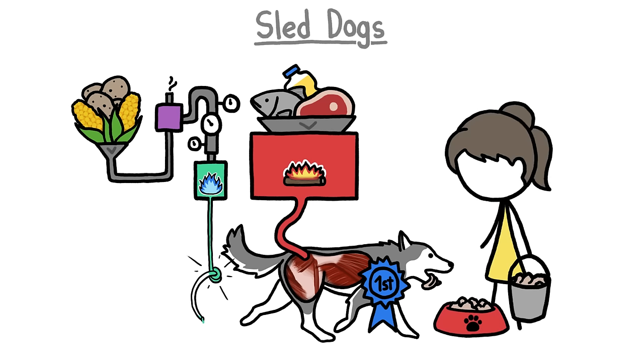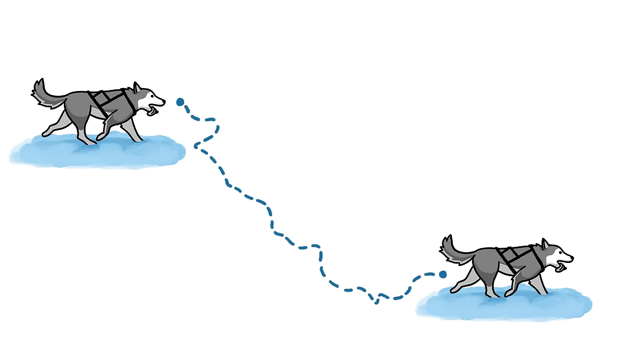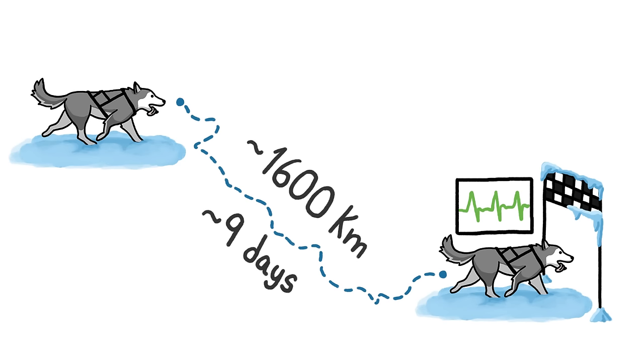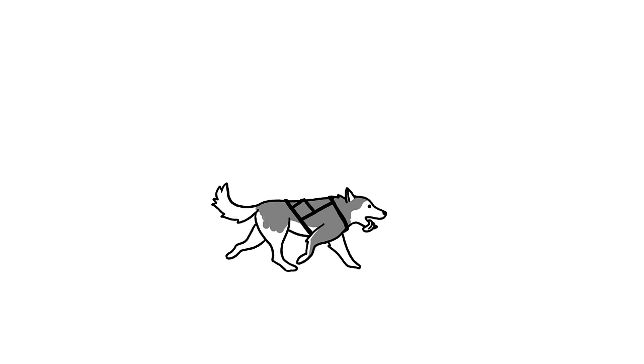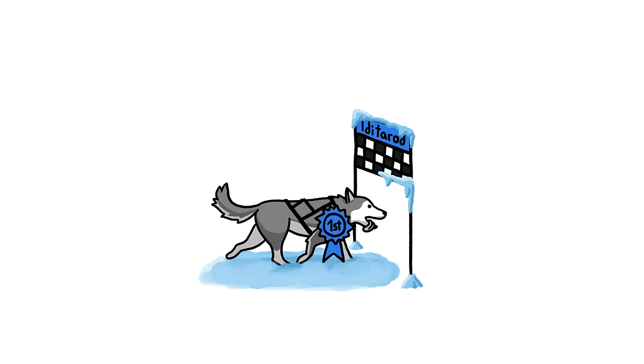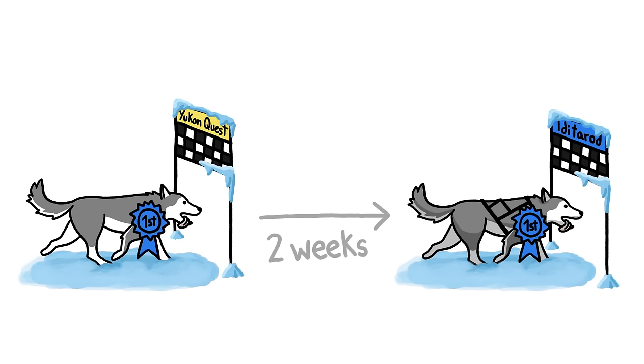We still don't know how this fuel-burning trick works, but we do know that after nine days and a thousand miles through the snow and ice, most dogs finish the race with the same baseline vitals that they started with. In fact, unlike human ultra athletes, who often need months to recover, the dog teams that do best in one ultra race are often the ones that have just recently returned from another one.